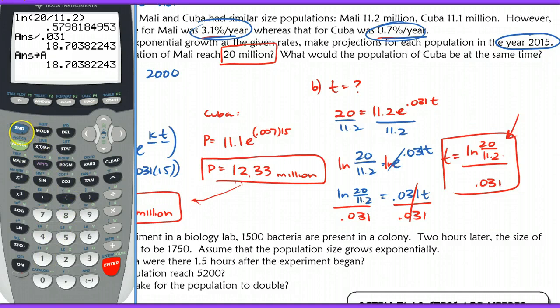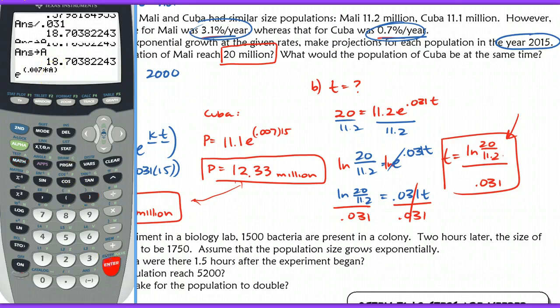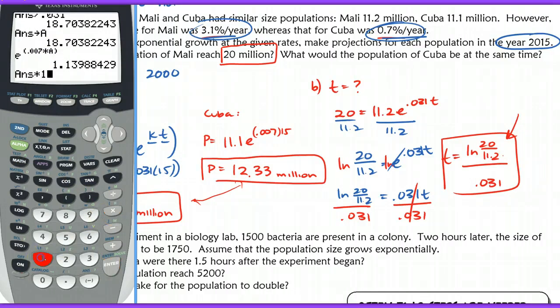When I go to calculate this, I'm going to now stick in my calculator, E to the 0.007 times, and then all I have to do is hit alpha A here. And now it's going to use that stored answer here, and then multiply this by 11.1. That was the starting amount for Cuba, in order to get their approximate population 12.65 million.